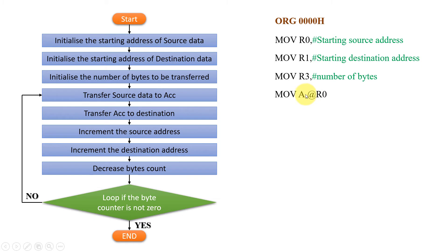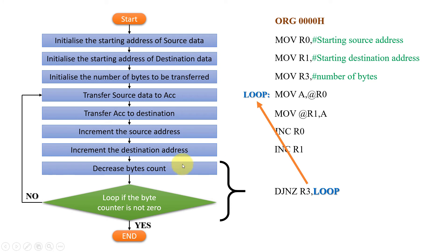Then we move the first byte into the A register using indirect addressing. Then we move the A register into the destination using R1. Then we manipulate the pointers: INC R0, INC R1, then decrement the byte counter and jump if not zero. The combined instruction is DJNZ R3 — the value of R3 is decremented and if it is not zero, a jump is executed to the loop label.